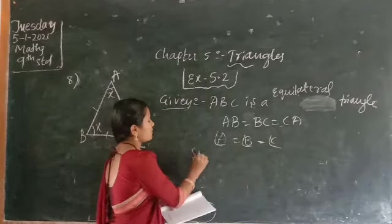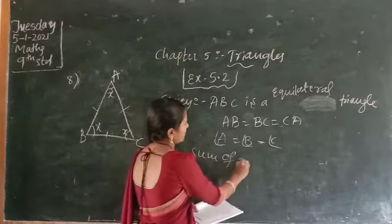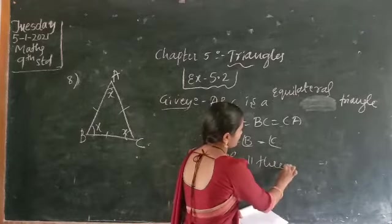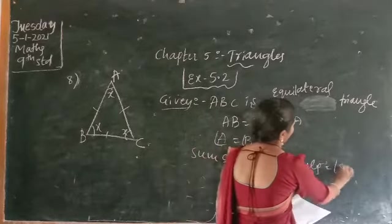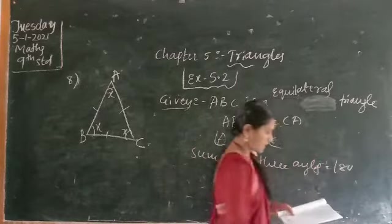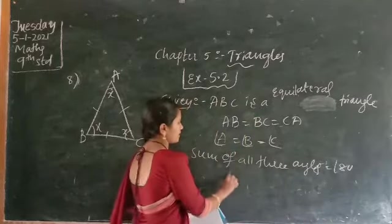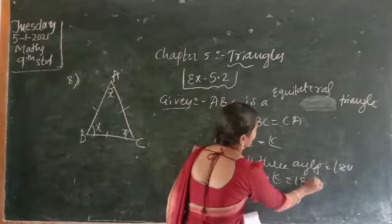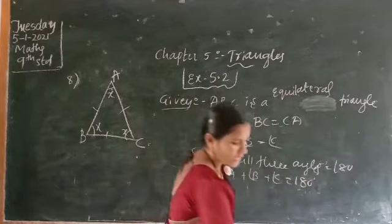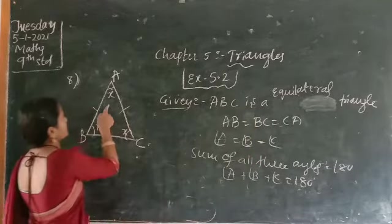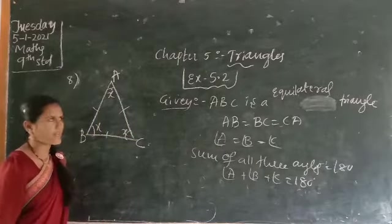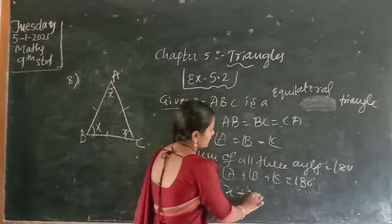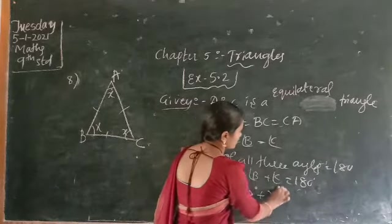Sum of all three angles is 180 degrees, which means angle A plus angle B plus angle C equals 180 degrees. Since we have to find the angle, I am taking each angle as X degrees. So angle A is X degrees, angle B is also X degrees, and angle C is also X degrees, giving X plus X plus X equals 180 degrees.